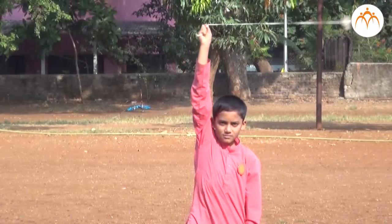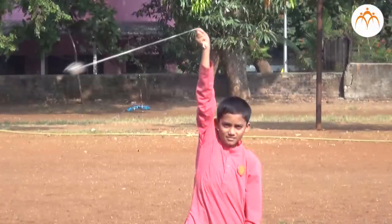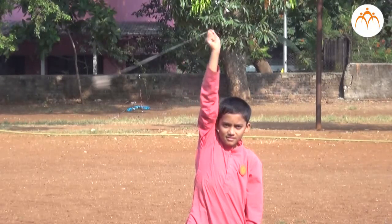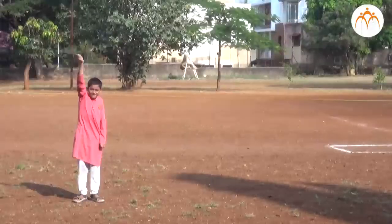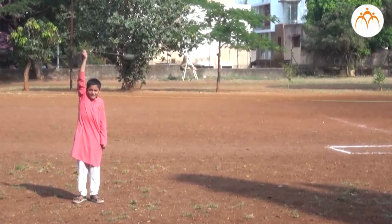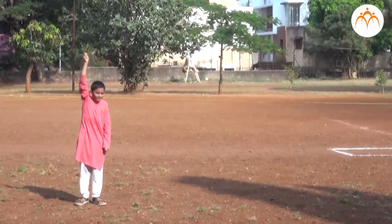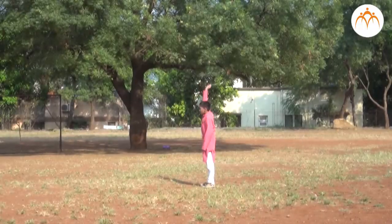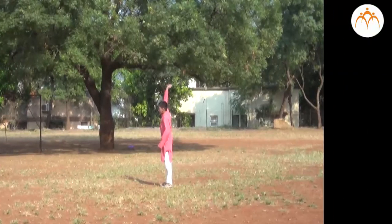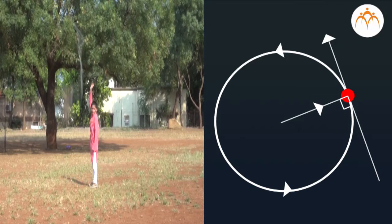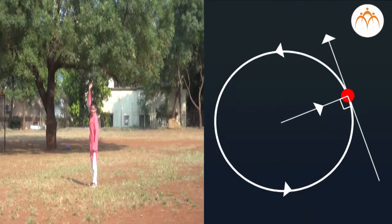If you tie a stone to a string and rotate it in a circle, the stone tends to fly off in a direction tangent to the circular path. This is due to centrifugal force acting on the stone.